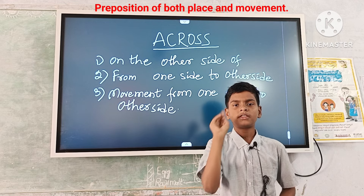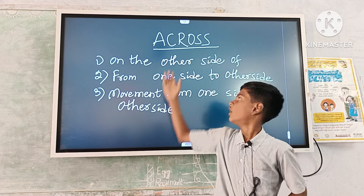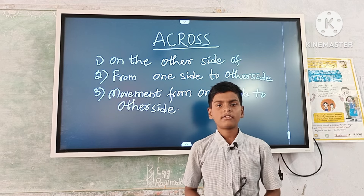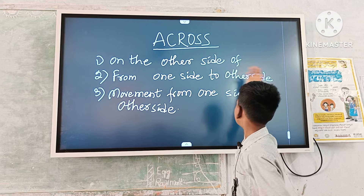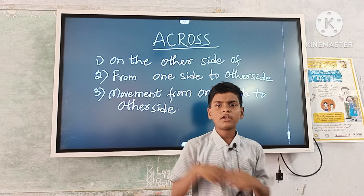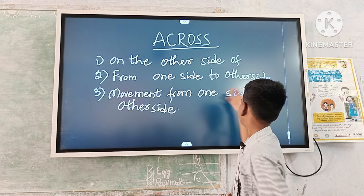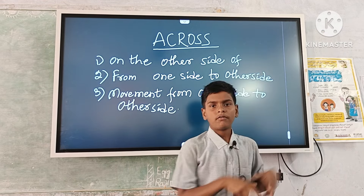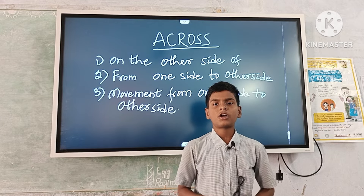Mainly it has three meanings. First one: on the other side — off avatali waipu. Second one: from one side to other side — vaka waipu nundi vairaka waipu. Third one: movement from one side to other side — vaka waipu nundi vairaka waipu will not talk.